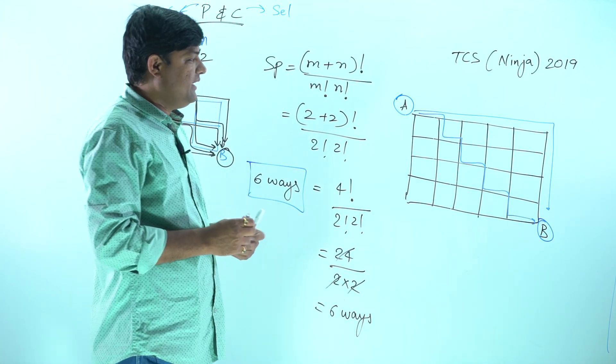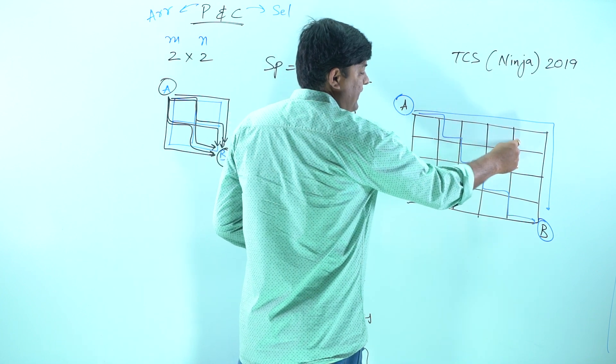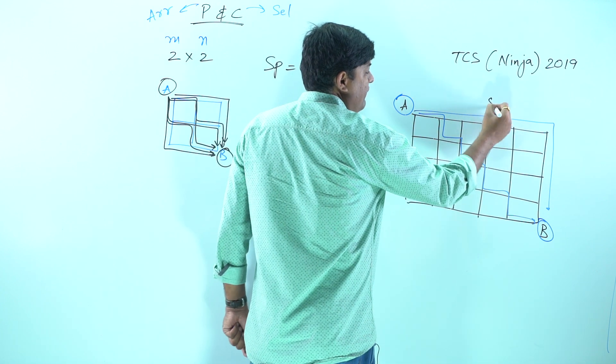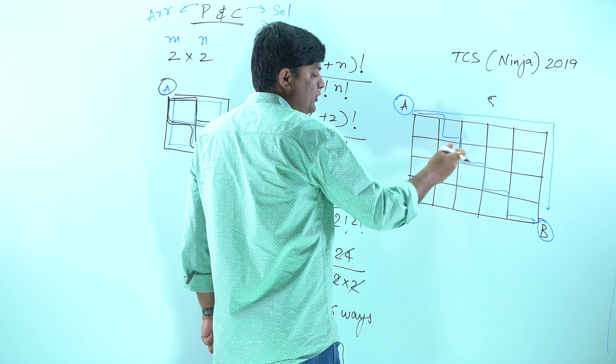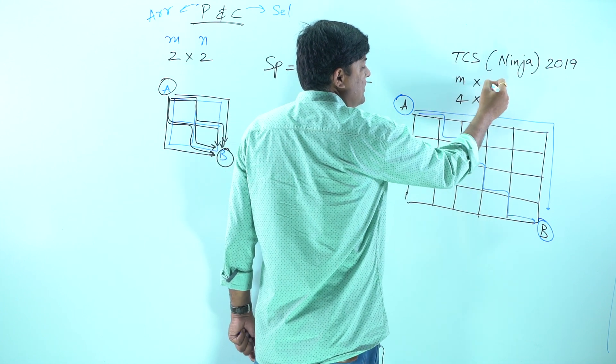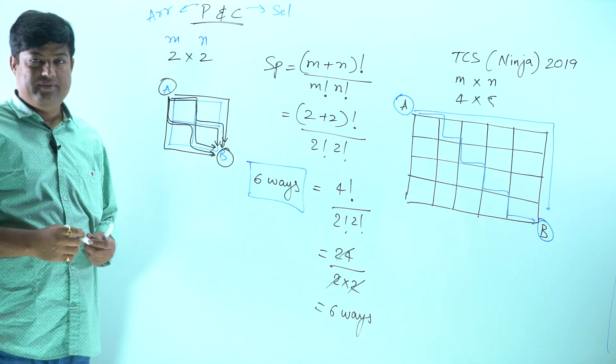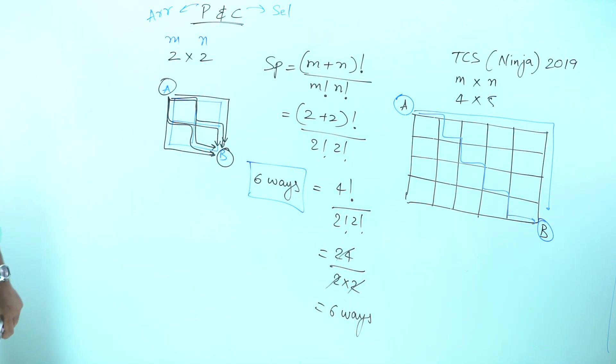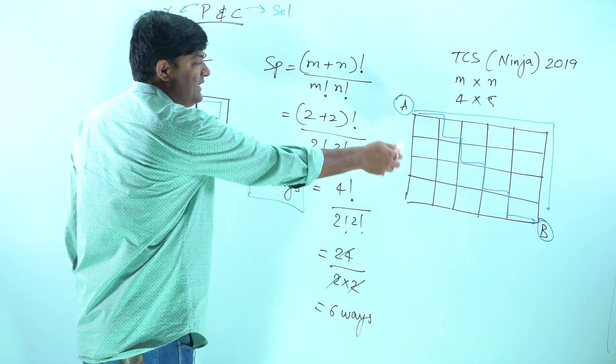To find out all these things, we should know the size of the grid. Let me show you: 1, 2, 3, 4, 5, so the number of columns are 5. And the rows: 1, 2, 3, 4, the number of rows are 4. So we can say the size of the grid is m cross n, that is 4 cross 5.